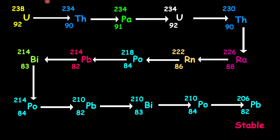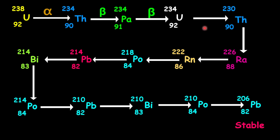Starting with uranium into thorium-234, the mass number decreased by 4 — surely alpha. From thorium into protactinium, mass number remains, so therefore beta. From protactinium into uranium, the mass number is the same, so therefore beta. Coming from uranium into thorium-230, mass number decreased by 4 — surely alpha.